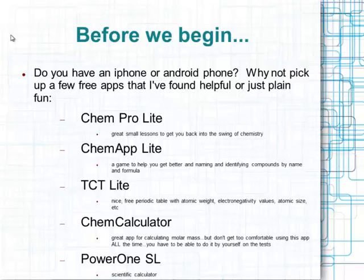The next program is ChemApp Lite. This is a game — it's kind of cool. It helps you get better at naming and identifying compounds by their formula. So if you struggle with formula writing or identifying names, this might be a good application for you and it's free. The next one on the list is TCT Lite. It is a free periodic table that has atomic weight, electronegativity values, and atomic size. I strongly recommend that particular program.